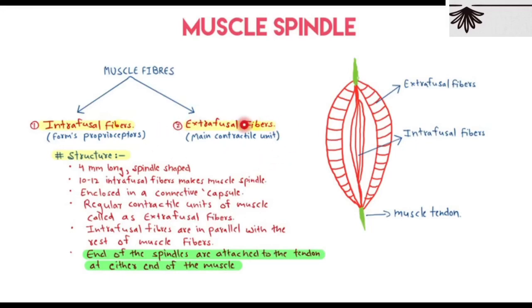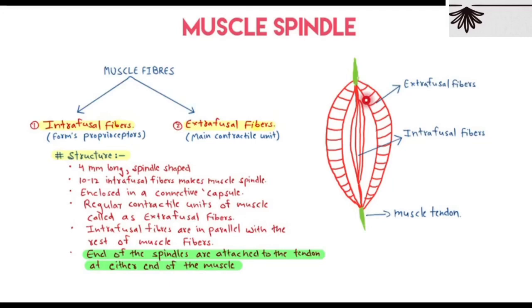Intrafusal fibers run in parallel with the rest of the muscle fibers — as seen in diagrams, extrafusal fibers and intrafusal fibers are arranged in parallel. The ends of the spindles are attached to the tendons at either end of the muscle, so intrafusal fibers are attached to the muscle tendons at both ends. The spindle is 4mm long and spindle-shaped.